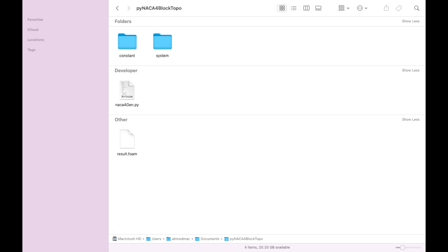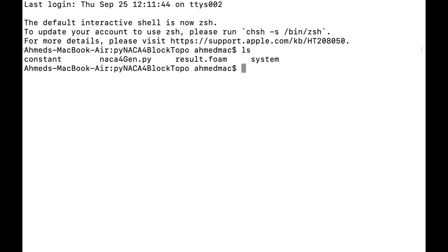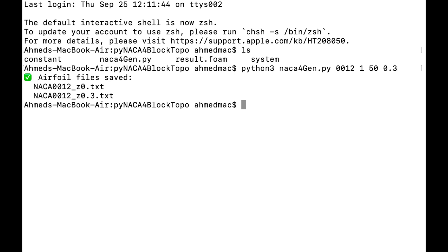Go to the project folder, open a terminal and run the following command: python3 naca4gen 0012 space 1 space 50 space 0.3 then enter. 0012 is the required airfoil shape, then 1 is representing the chord length, 50 is the required number of points and 0.3 is the span. This command will generate two files, one at z equal 0 and the other at z equal 0.3.